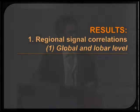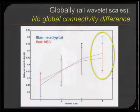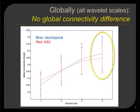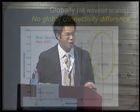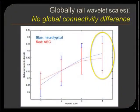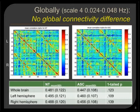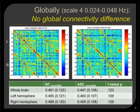Here are the results. First, we looked at whether there are connectivity differences at the global or lobar level. We examined different wavelet frequency bands, and as you can see, no matter what frequency band, there are no detectable global connectivity differences. We particularly looked at the very low frequency band — 0.024 to 0.048 Hz — and again, you cannot see any global mean differences, or differences between left or right hemispheres between groups.